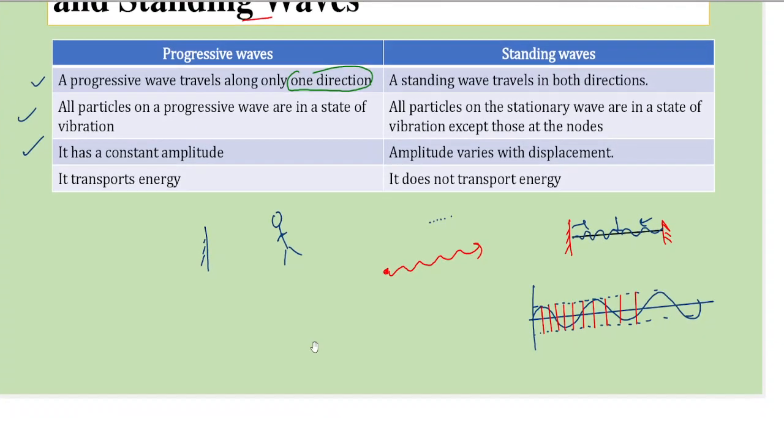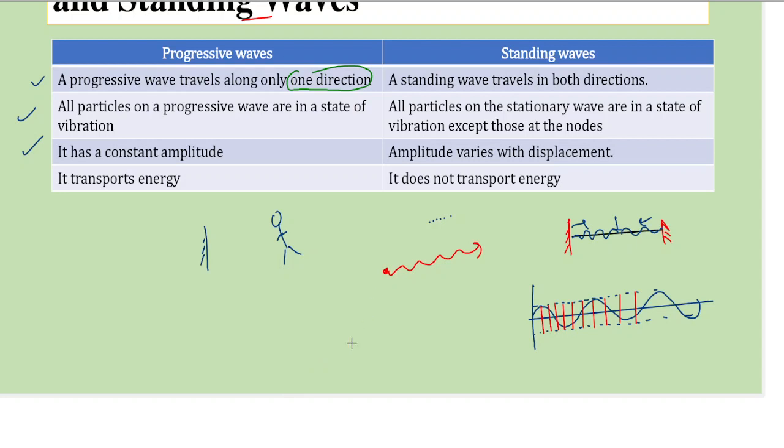But in case of a standing wave, we saw that the amplitude, the resultant amplitude, which was called as capital A, that was given as 2A times sine of Kx, which means the amplitude depends on the distance also, or distance only. So that is the third difference.